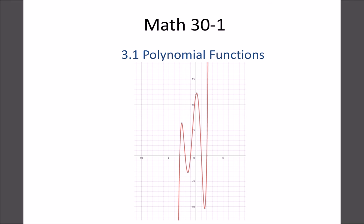We're going to start our third chapter on polynomial functions. Today we're going to figure out what a polynomial function is, what it looks like, some patterns and trends we can use to figure out what the graph would be, and what the x and y-intercepts are. This title page shows a complicated polynomial function, but basically it is a combination of things we've already done before.